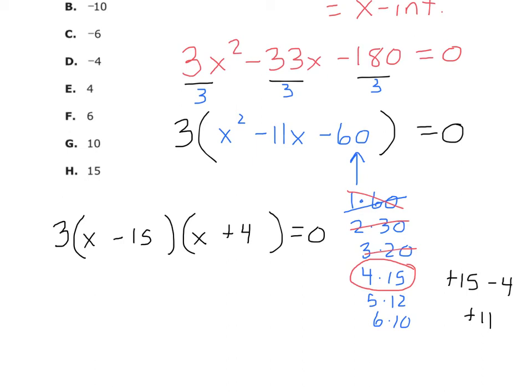But I have not calculated the zeros yet, have I? Okay. So I need to set each piece equal to zero. So I'm going to set this 3 equal to zero, this x minus 15 equal to zero, and this x plus 4 equal to zero. So when I set 3 equal to zero, is that a true statement? No. No. So there's no answer there.